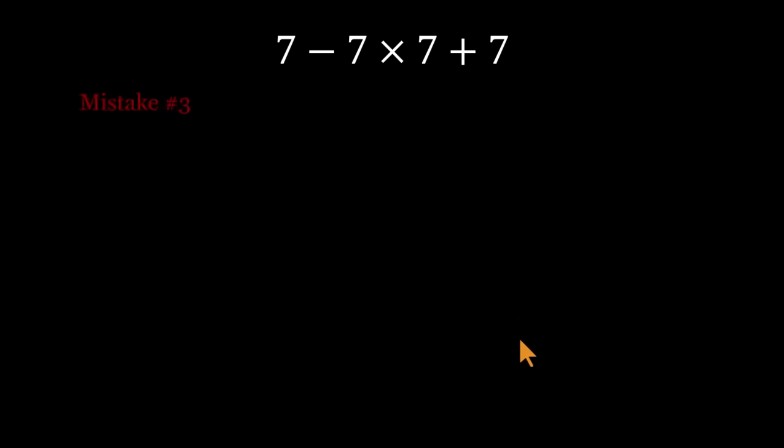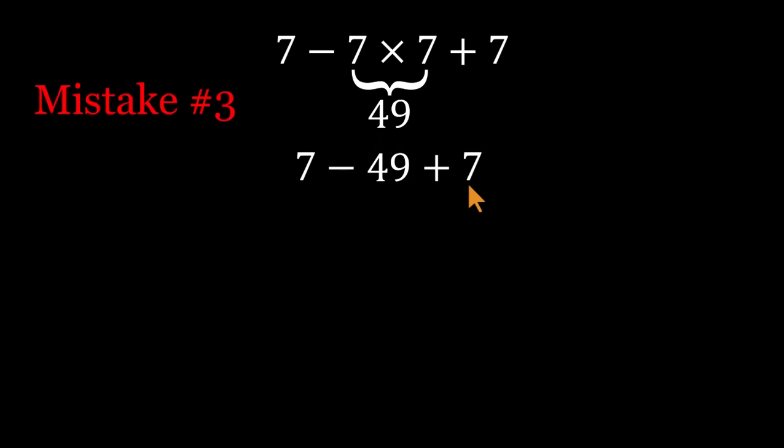And the third mistake, the bold but blunt one. They start strong with multiplication. 7 times 7 equals 49. Then they add 49 and 7 to get 56. Finally, they subtract that from 7 and end up with negative 49. Closer, but still not right.